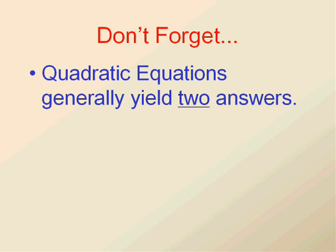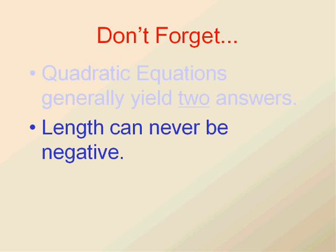And don't forget with quadratics, you're generally going to get two answers. They may be the same number but they're going to be two answers. So there's probably going to be something that gets knocked out because we really only want one answer, one final answer. And length, if length is involved, it can never be negative. So you'll just cross that out if you get a negative answer for length anyway.